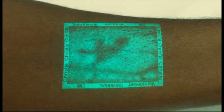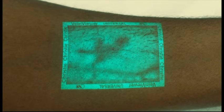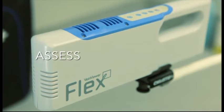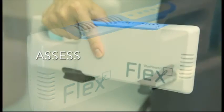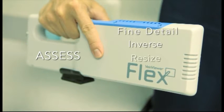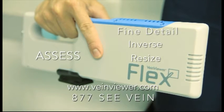VainViewer Flex comes standard with our universal imaging mode, which is appropriate for all patients and part of the exclusive Assess Imaging Suite. The following Assess Imaging Modes are optional and require a software upgrade. To add any of these features to your Flex unit, contact Christie Technical Support through VainViewer.com or by calling 877-C-Vain.